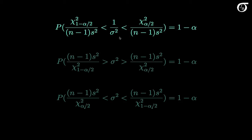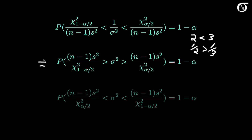When we do that, we end up with this. Now we're going to get sigma-squared back up top by taking the reciprocal of these three quantities. But when we do that, the direction of the inequalities is going to change. For example, 2 is less than 3, but 1 half is greater than 1 third. So when we take the reciprocals, we end up with this.